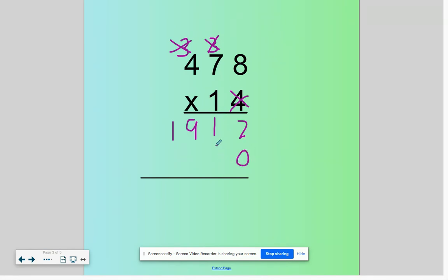1 times 8 is 8. 1 times 7 is 7. 1 times 4 is 4. Take our 2 lines and add them together. You will get an answer of 6,692.